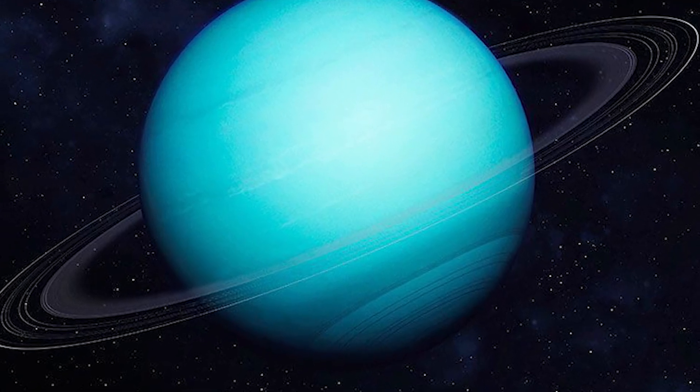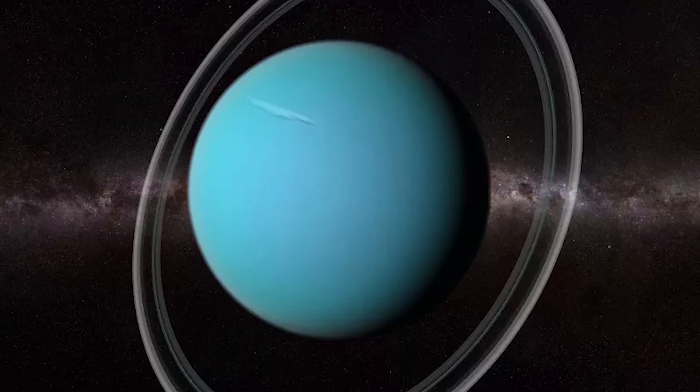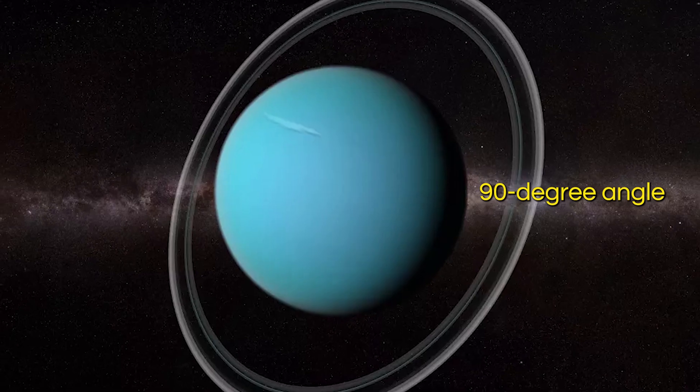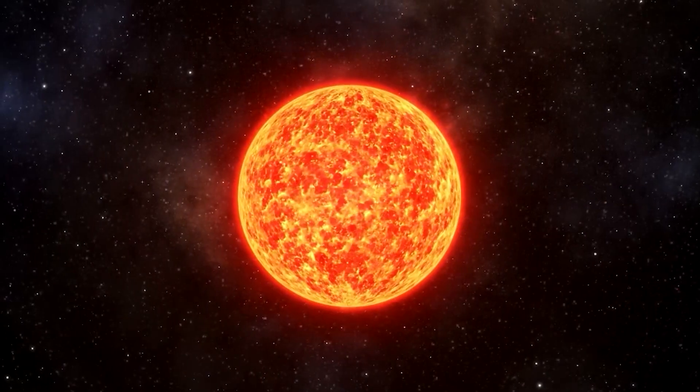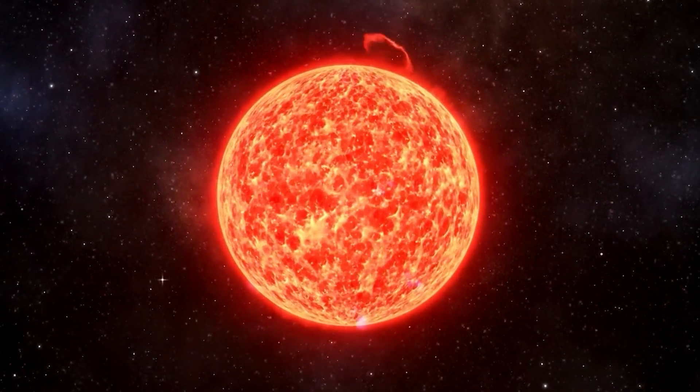Uranus has a unique orbit in the solar system and rotates on its side, tilted at a roughly 90-degree angle relative to its path around the sun.